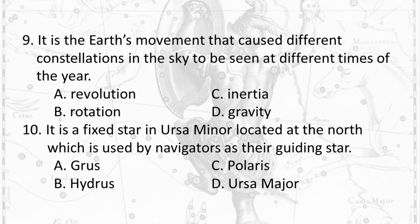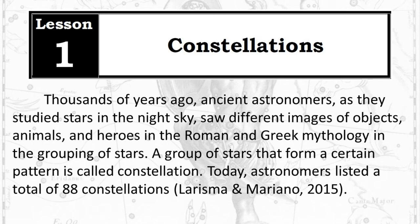Question 10: It is a fixed star in Ursa Minor located at the north, which is used by navigators as their guiding star. A. Grus B. Hydrus C. Polaris D. Ursa Major.